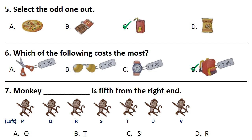Question No. 7. Monkey is 5th from the right end. Answer is Option D. That is R.